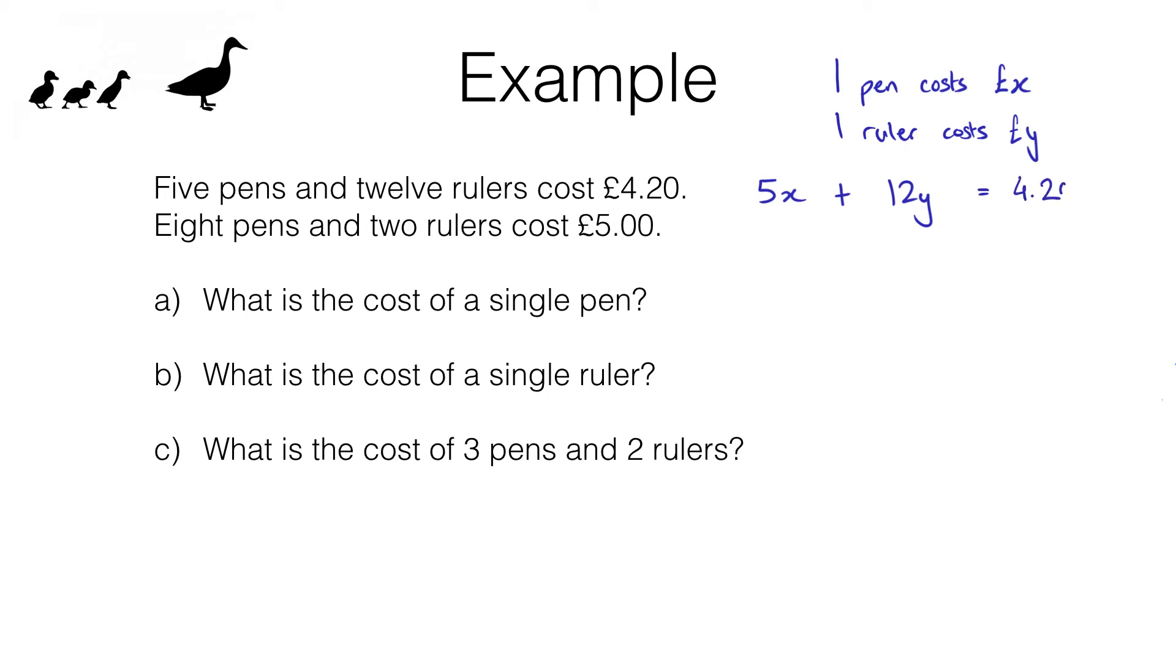So I've turned that first sentence into an equation. Doing the same thing with the second sentence I get 8x plus 2y equals 5. Now looking at these equations it seems easiest to eliminate the y's. What I can do is multiply the second equation through by 6. That's going to give me 48x plus 12y equals 30.